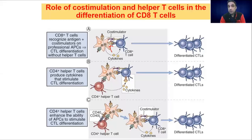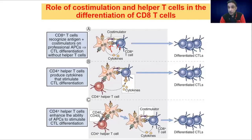CD8 cells also require co-stimulation in the same way. If the connection is there and co-stimulation is there, it activates the dendritic cell as well. It produces cytokines, and those cytokines activate or support the process of activation of CD8 cells. These cytokines are captured by receptors on the surface of CD8 cells, leading to their activation and differentiation to produce cytotoxic T cells.